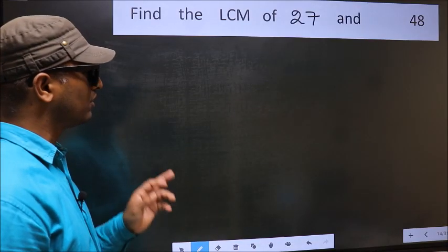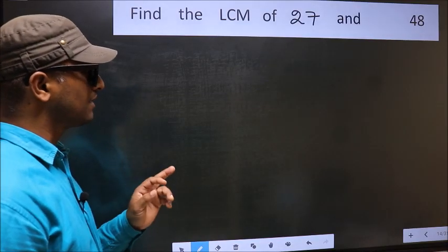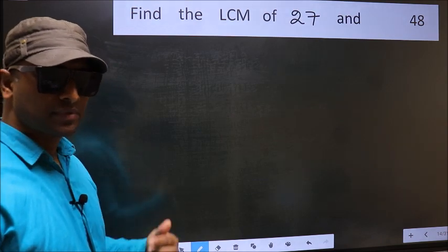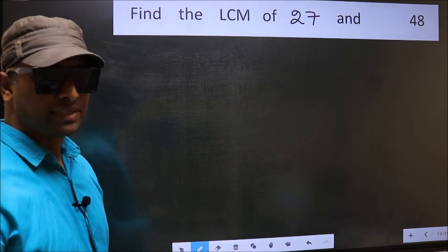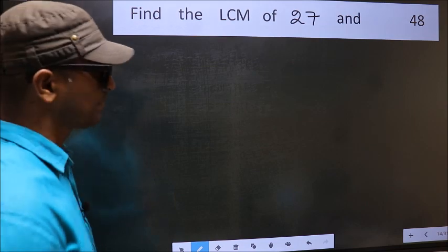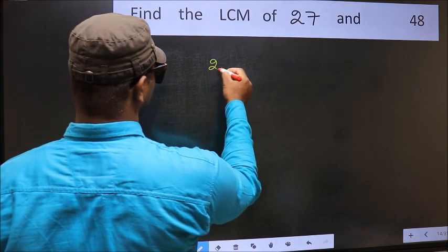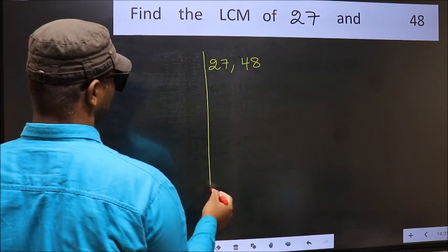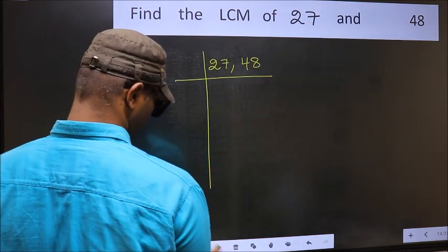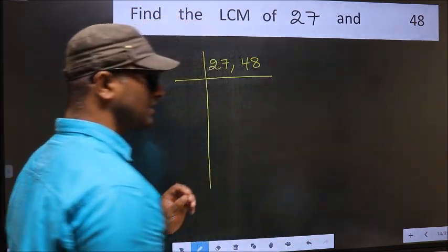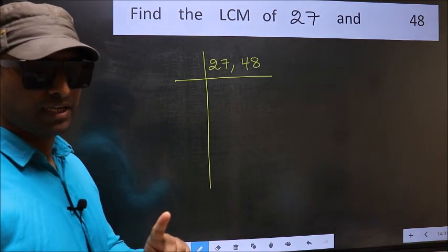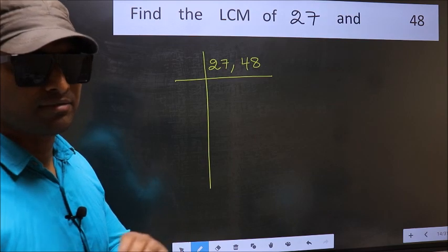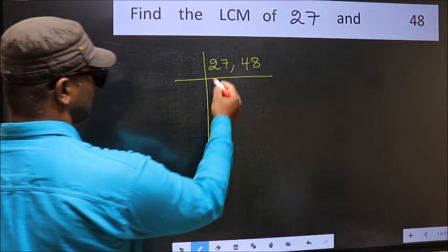Find the LCM of 27 and 48. To find the LCM, we should frame it in this way, writing 27 and 48. This is your step 1. Now you should focus on the first number, which is 27 here.